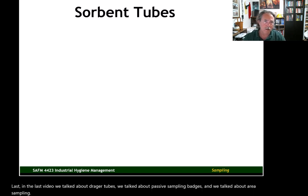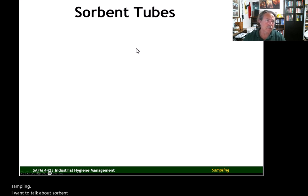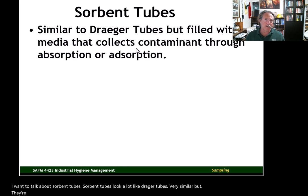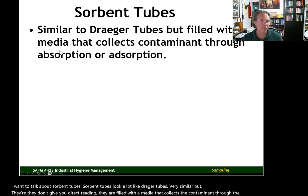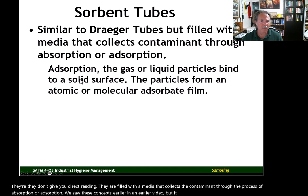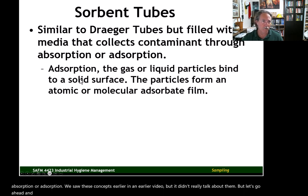Now I want to talk about sorbent tubes. Sorbent tubes look a lot like Draeger tubes — very similar — but they don't give you a direct reading. They are filled with a media that collects the contaminant through the process of absorption or adsorption. We saw these concepts earlier in a previous video, but I didn't really talk about them.